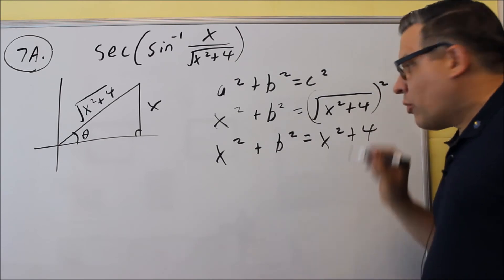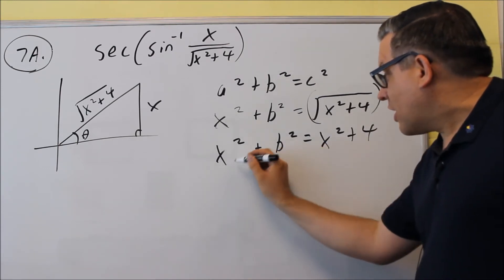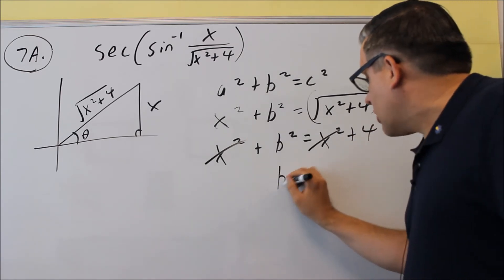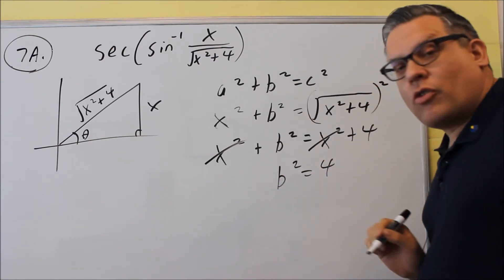Now because I got rid of that radical, that means now I can actually subtract x squared from both sides. And so both of those are going to cancel out. So I'm going to leave you with b squared is going to equal 4.